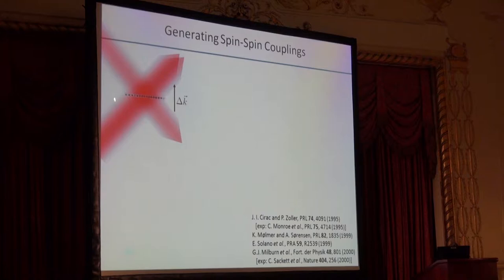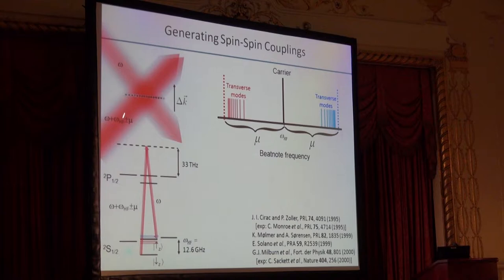The way that we go about this is we irradiate the ions with two counter-propagating laser beams. One beam at frequency omega, the other at frequency omega plus that hyperfine splitting of 12.6 gigahertz, plus and minus an additional detuning mu. Since these ions live in a harmonic trap, they exhibit these transverse modes of motion. If we set these symmetric detunings mu to couple to these transverse modes, then when you work through all of the math you end up with an Ising type interaction, a spin-spin interaction sigma_x^i sigma_x^j, and the strength is parameterized by the spin-spin coupling Jij, typically of order a few hundred hertz to a kilohertz for our strongest couplings.